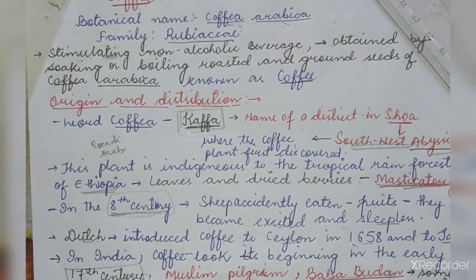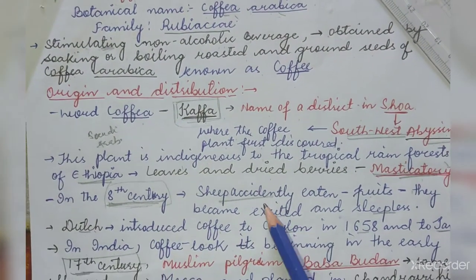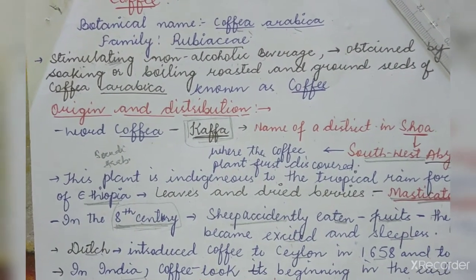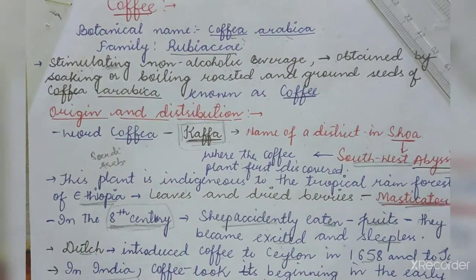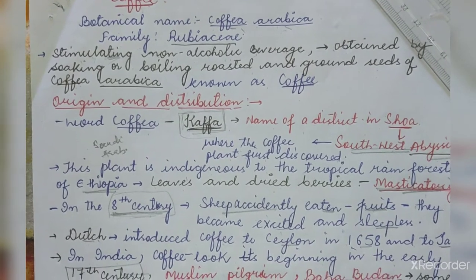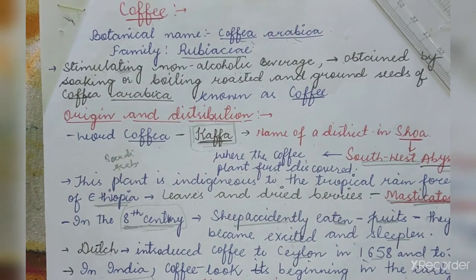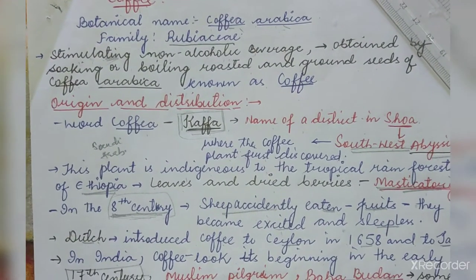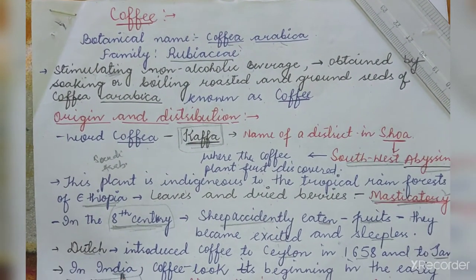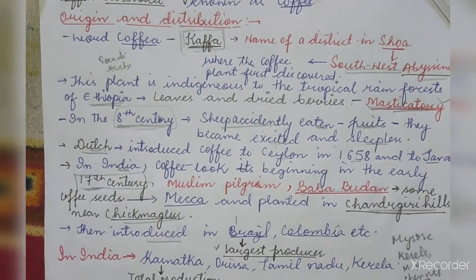In the 8th century, sheep accidentally ate the fruits of this plant and became excited and sleepless — they became energetic and their need for sleep disappeared. This is how it was observed that coffee stimulates the body of an individual. The Dutch introduced coffee to Ceylon in 1658 and to Java.